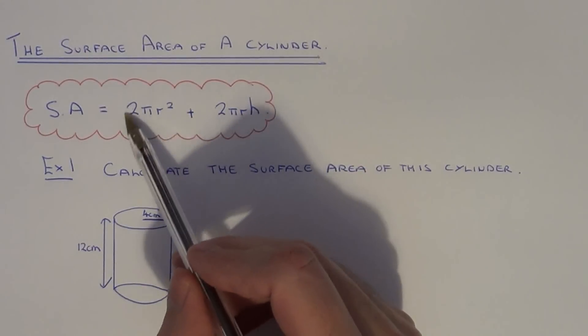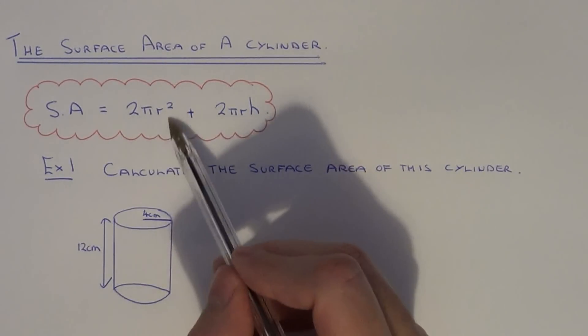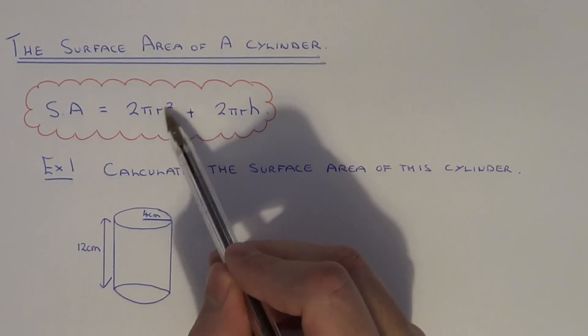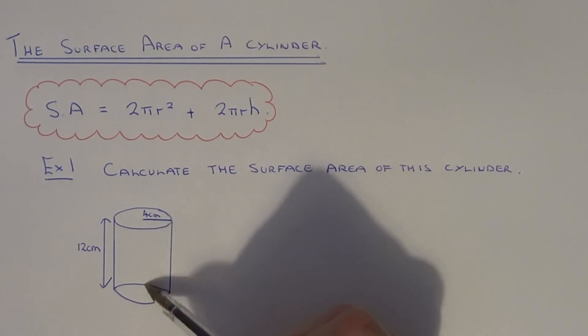This bit of the formula here gives you the area of the two circular faces, because πr² is the formula for the area of the circle and you have two circles at the top.